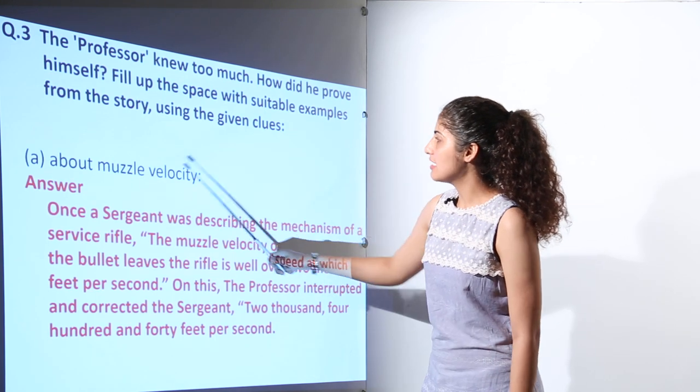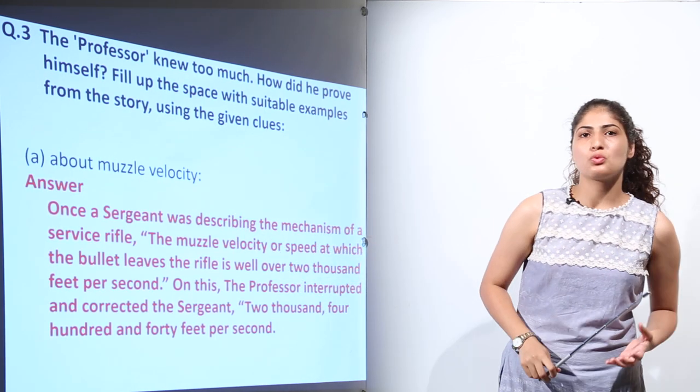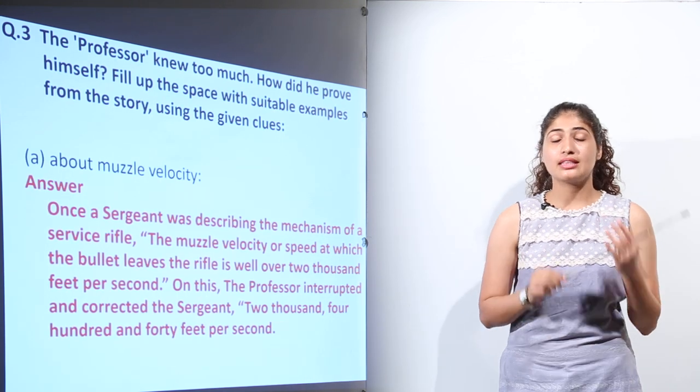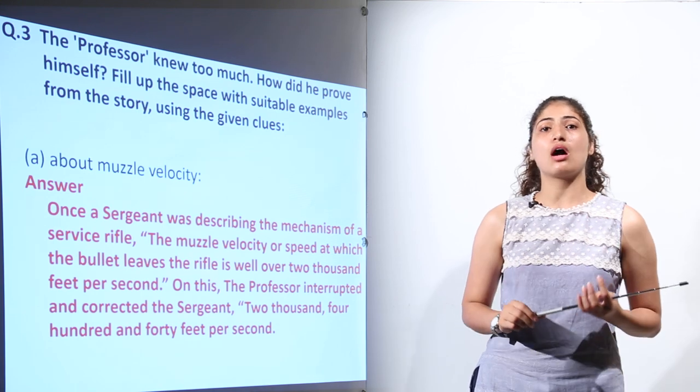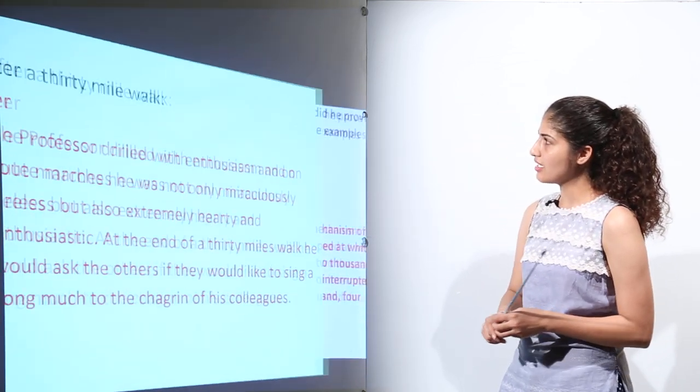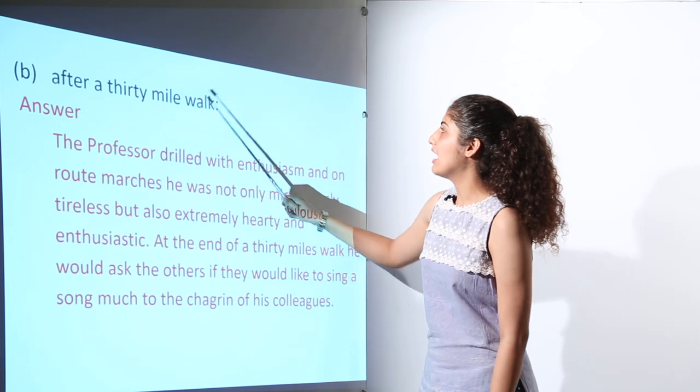First is about muzzle velocity. When the instructor was telling that the muzzle velocity is 2000 feet per second, then he interrupted the instructor and said it is 2440 feet per second.